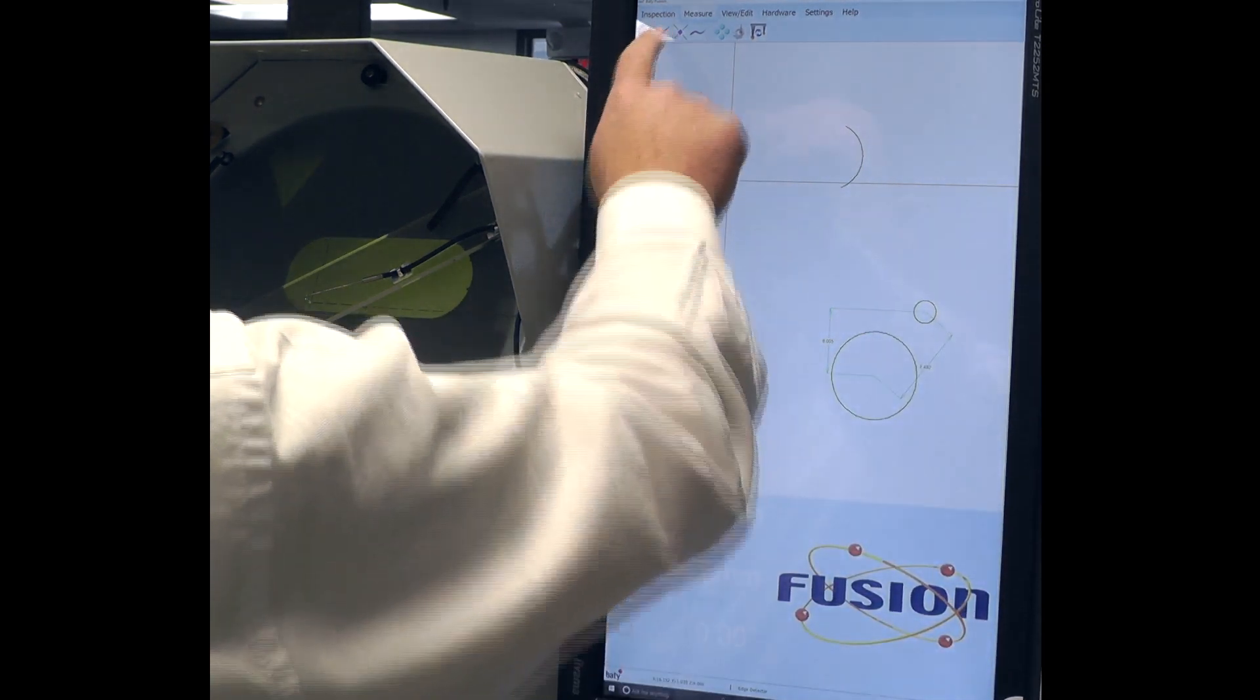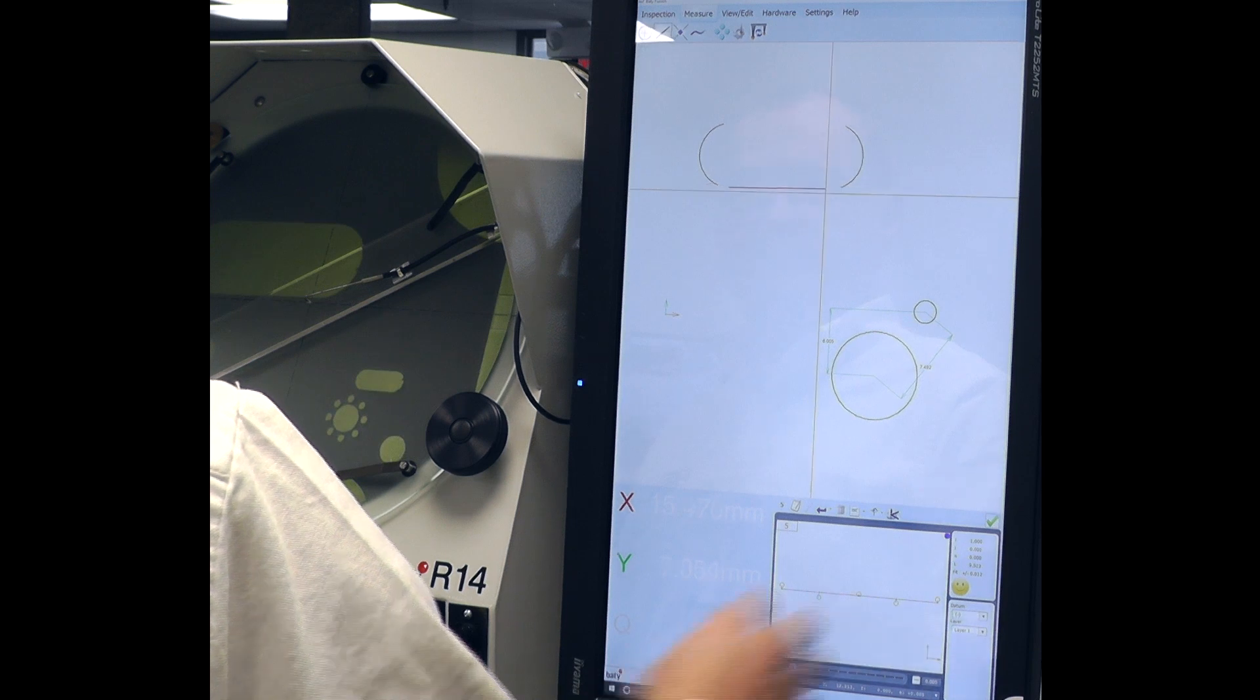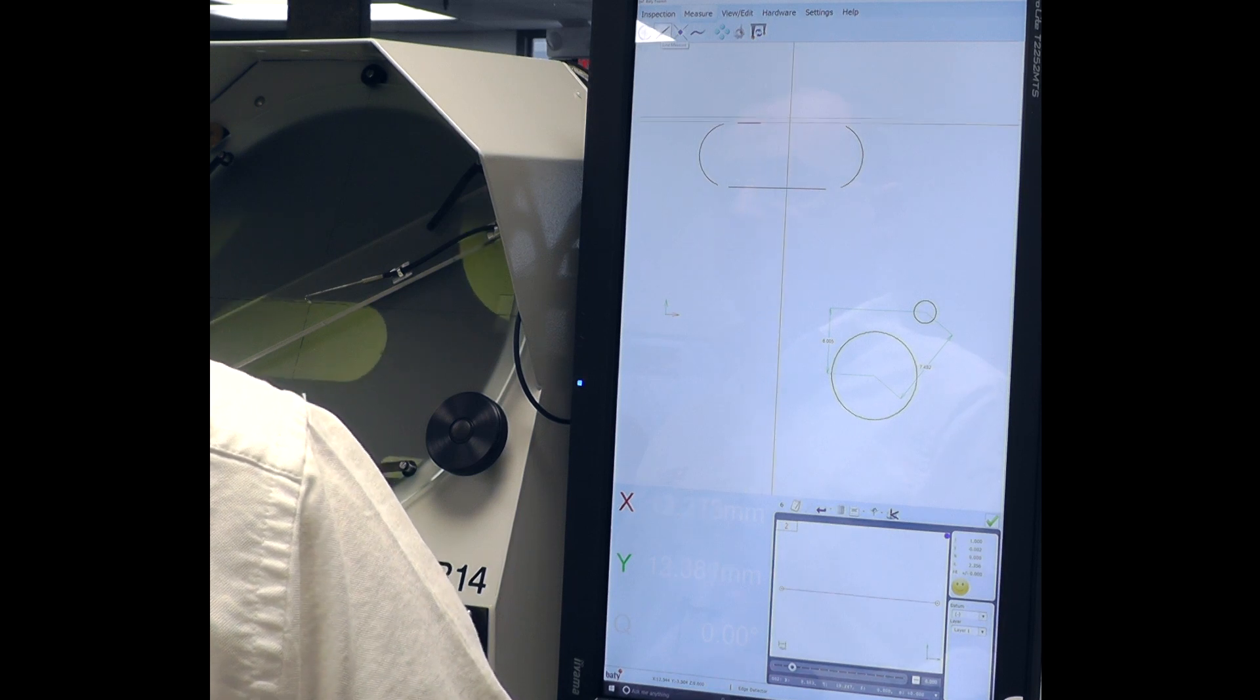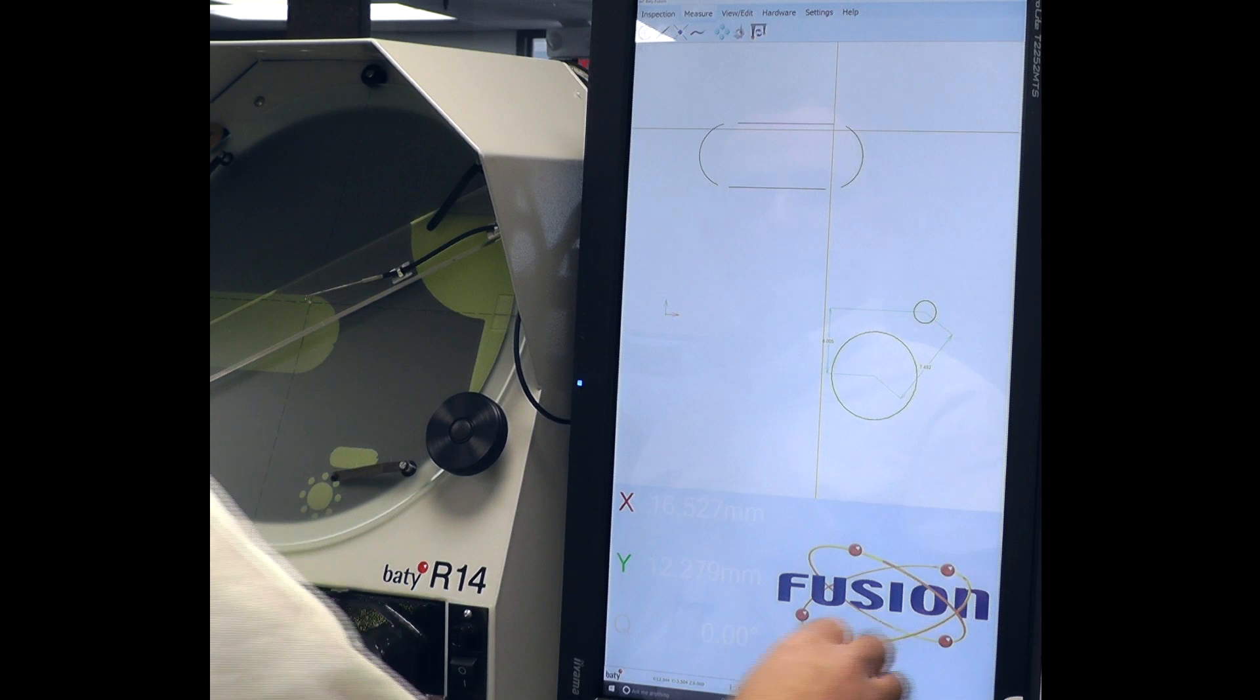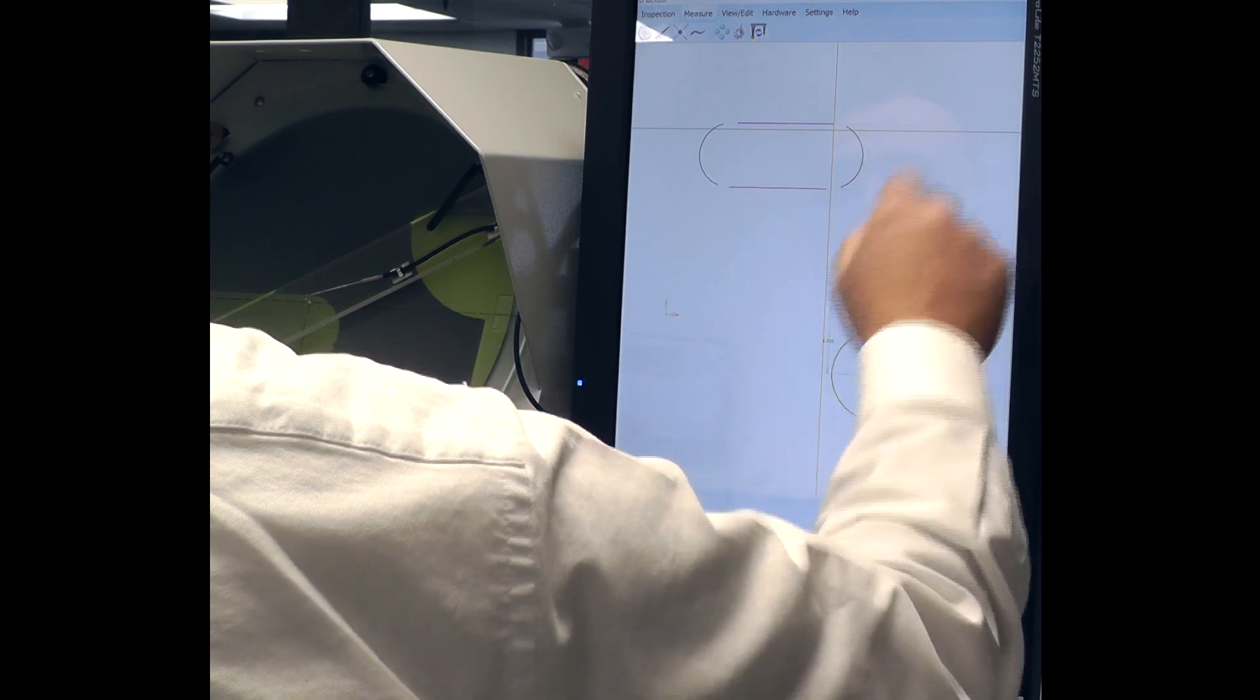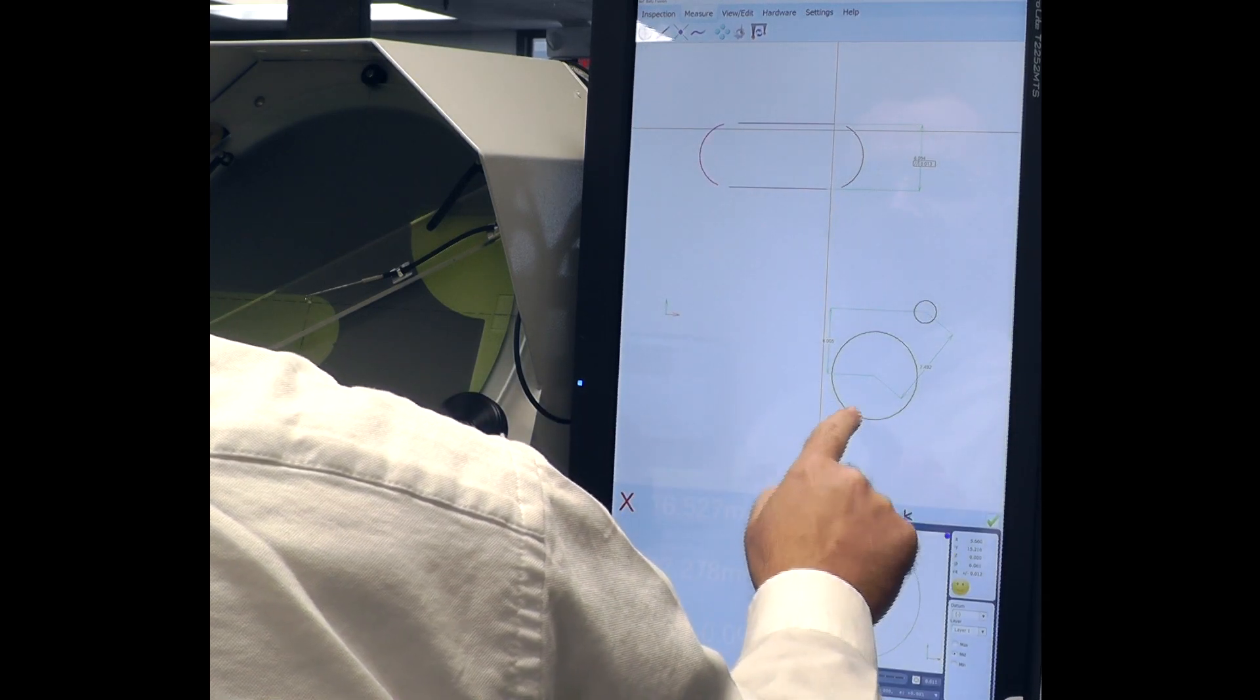And then I'll do the two lines here that are part of this slot. We've measured our slot. And now we can construct the distance between these two lines easily with our tools. Distance between these arcs. And we can get the distance to our origin.